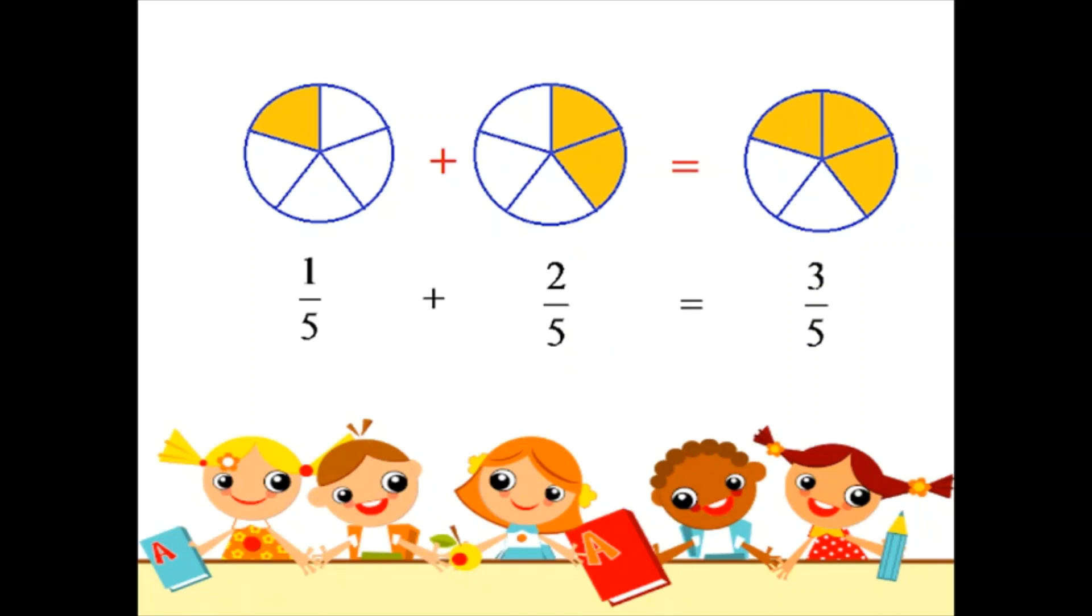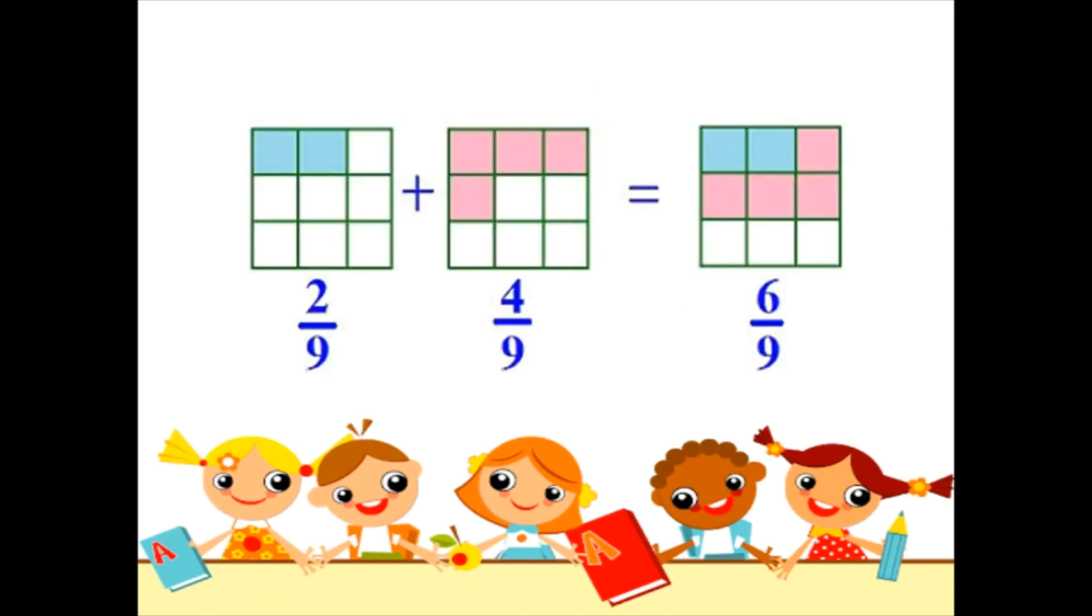Now let's look at the next example. In the first picture, 2 boxes out of 9 are shaded, hence the fraction 2 by 9. And in the second box, 4 out of 9 parts are shaded.